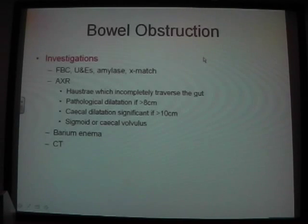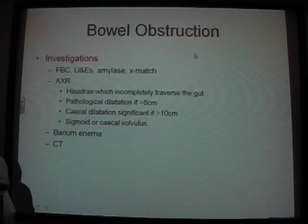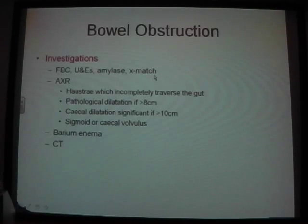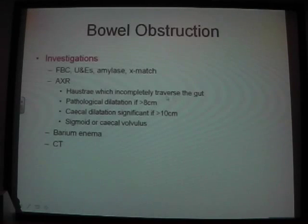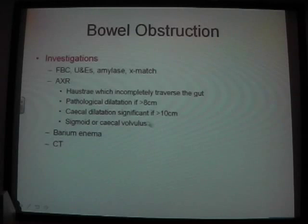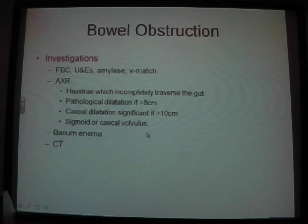Investigations include routine bloods and crossmatch — because if it's a serious mechanical obstruction it could perforate and the patient may need an operation. On abdominal X-ray, you see the haustral pattern incompletely traversing the colon, pathological dilatation of more than 8 cm and caecal dilatation significant at more than 10 cm. You can also see sigmoid or caecal volvulus. Barium enema is another investigation, though less common. CT is also used.